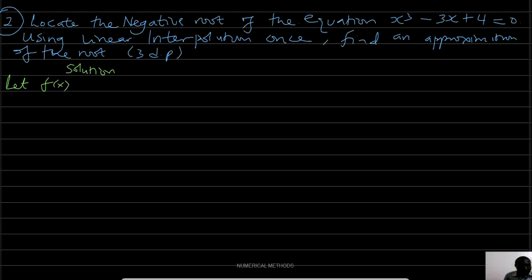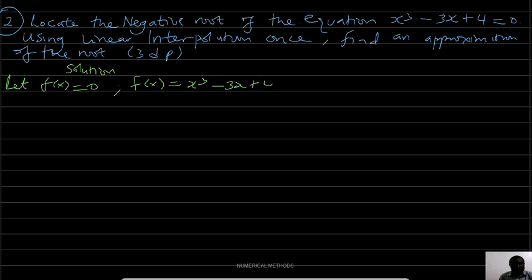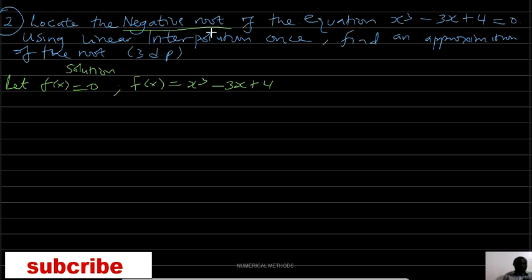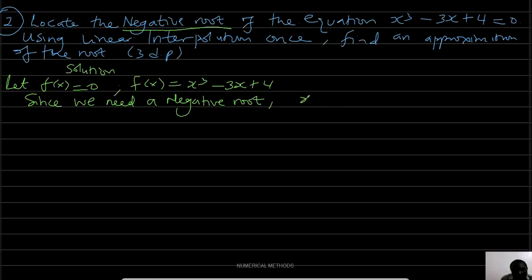Let f(x) = x³ - 3x + 4. Since we are interested in the negative root, we only check negative values of x: 0, -1, -2, -3, -4, and so on.